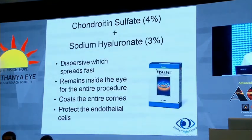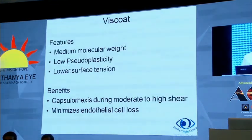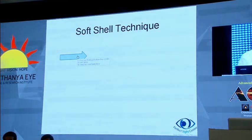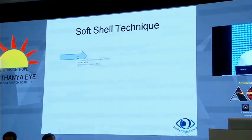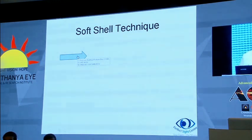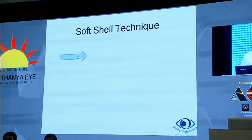Viscoat is a dispersive — it spreads fast, remains inside the eye for the entire procedure, coats the entire cornea, and protects the endothelial cells. Now, the soft shell technique: a lot has been said about it. Essentially, it's a combination of different types of viscoelastics to gain certain advantages. The problem is that most are expensive, and in a country like ours, we have gotten used to the good old HPMC. There is also a lot of confusion — there is the soft shell, the ultimate soft shell, and the tri-soft shell.